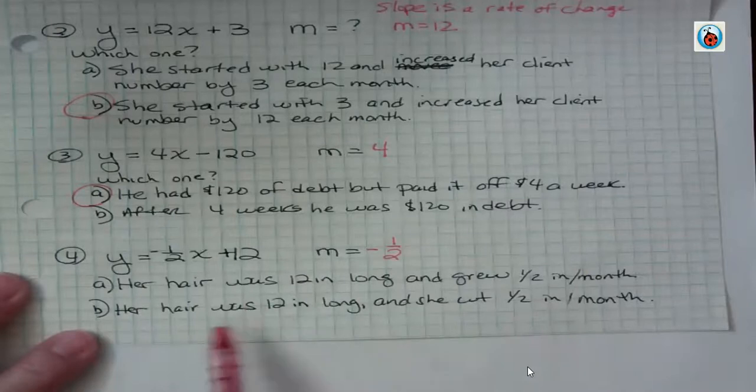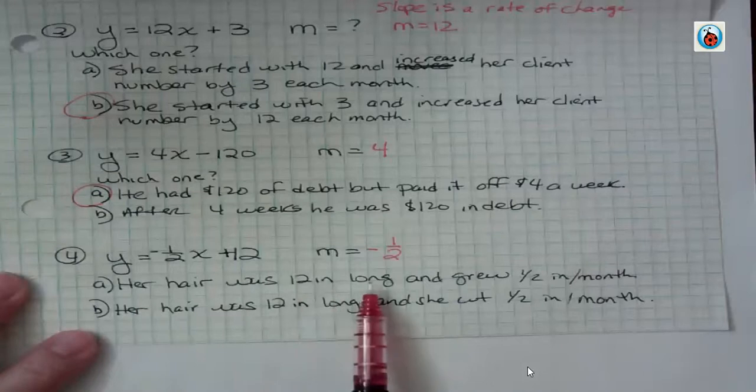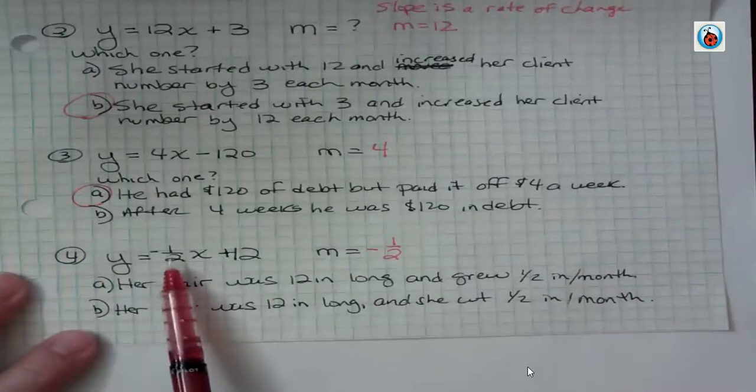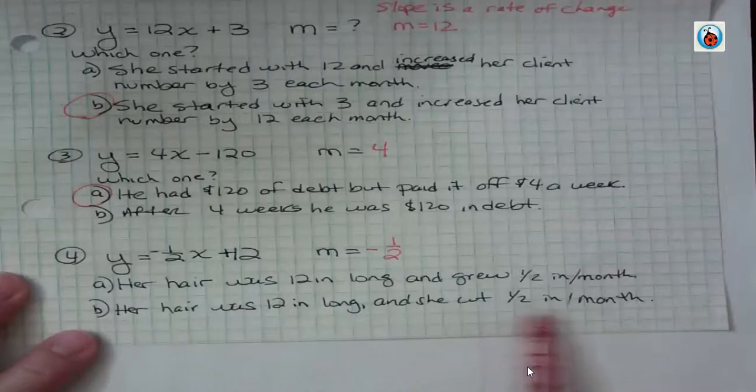What was the starting point of her hair? Well, she had hair that was 12 inches long. Her hair was 12 inches long and she grew a half an inch a month. No. If she was growing a half an inch a month, we would have a positive one half, right? So that's not it. Her hair was 12 inches long and she cut a half an inch per month.